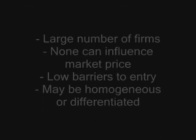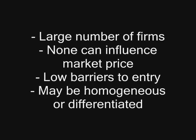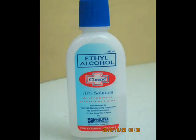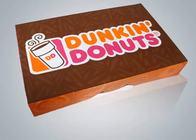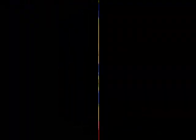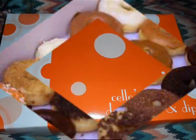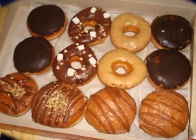And last is monopolistic competition. It is a common form of industry structure characterized by a large number of firms, none of which can influence the market price. There are low barriers to entry and products may be homogeneous or differentiated. Examples are the different sellers of rubbing alcohol and sellers of donuts. Their products are all the same; it's just that they differ in some things like their prices, place and location, packaging, advertisements, brand, quality, services, and taglines.